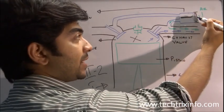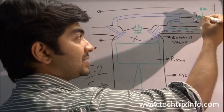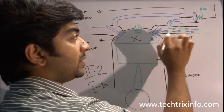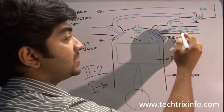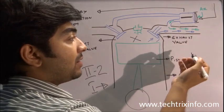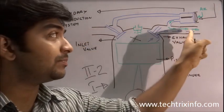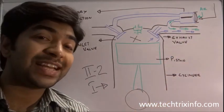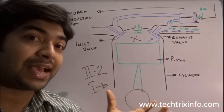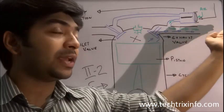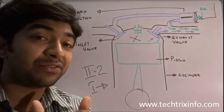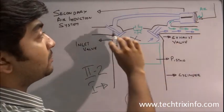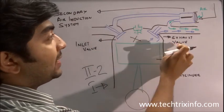What it does is: when exhaust is coming through, this diaphragm activates and sucks fresh air from the atmosphere, supplying it to the exhaust valve to mix with the outgoing exhaust. By mixing fresh atmospheric air with the exhaust, the percentage of real exhaust gases — the carbon dioxide and NOx — reaching the atmosphere is reduced.